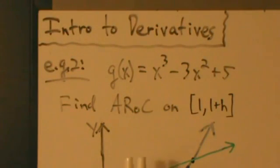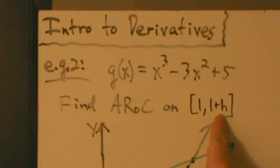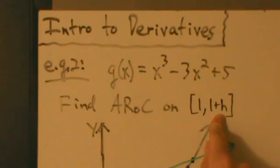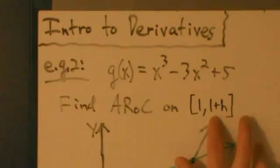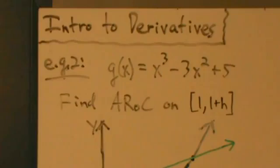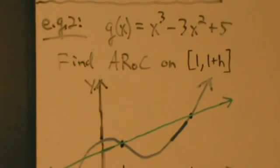We're going to find the average rate of change, but we're going to do something a little bit different. We're going to find the average rate of change on the interval from 1 to 1 plus h. What is h? It's pretty much just any number — it could be positive, it could be negative, but it's not 0, because if h is 0 then we just have 1 and 1, so nothing's really happening. Let's just assume that h is a positive number for our picture here.